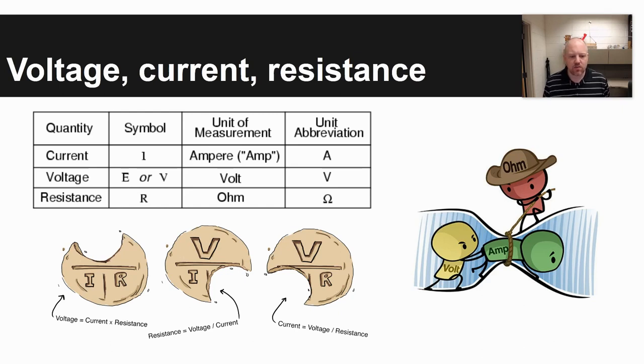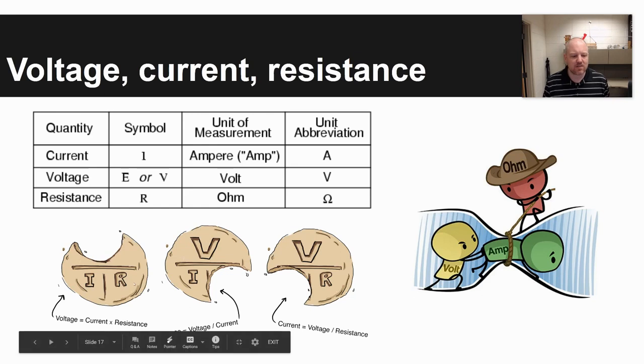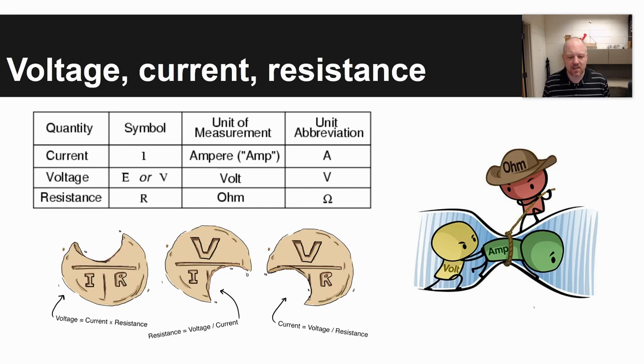The equation that you use for this is V equals I times R. Voltage is equal to current times resistance. You can use a triangle for this if it helps you. You can see in this triangle, whatever symbol you cover up or eat out of this cookie in the example, you are left with. For current, I is equal to V divided by R.